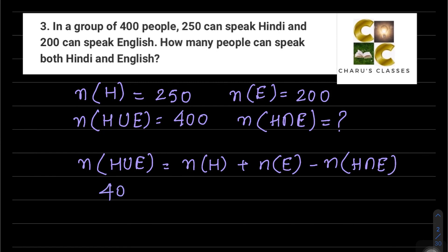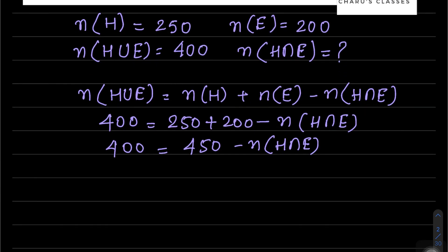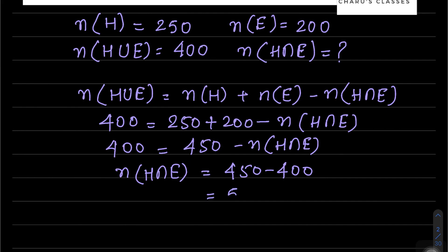Substituting the values: 400 = 250 + 200 - n(H∩E), so 400 = 450 - n(H∩E). Therefore n(H∩E) = 450 - 400 = 50.